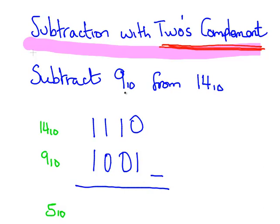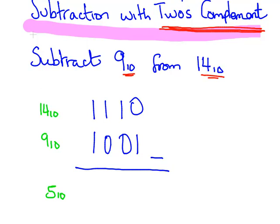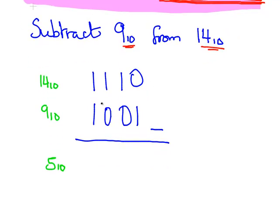Suppose we want to subtract 9 from 14. That subscript 10 indicates it's a decimal number. So conventional decimal: 14 minus 9 gives you 5. Here is how we would do it in binary subtraction. Those are the numbers in binary form — that's 14 in binary and 9 in binary.